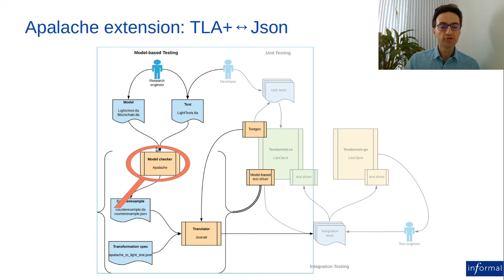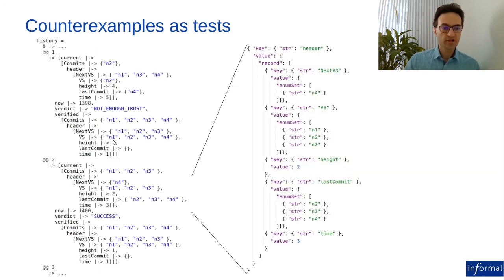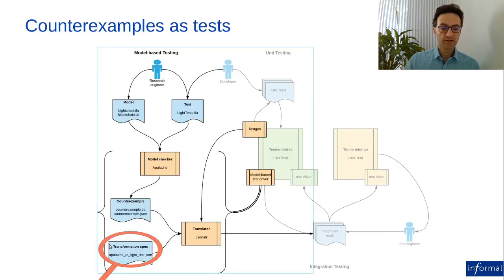For the model checker, we only needed to extend it with JSON input/output support for integration purposes. In fact, you can now use Apalache as a translator between TLA plus and JSON and we highly encourage everyone interested to use this feature. You could use it, for example, to integrate TLA plus with your tools. Now how does a counterexample look like? A counterexample is a sequence of history states. At each state of this history, we have the current block, the current time point, the verdict that we expect from the light client and the latest verified block. This is how a small portion of this history is translated into JSON. Don't be scared by the large size of the encoding. This is meant only for automatic processing.